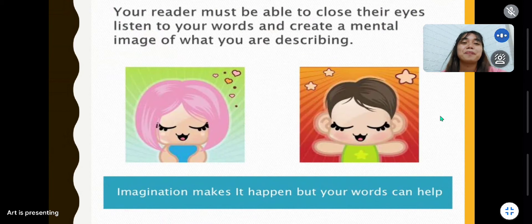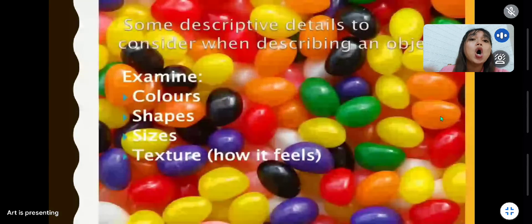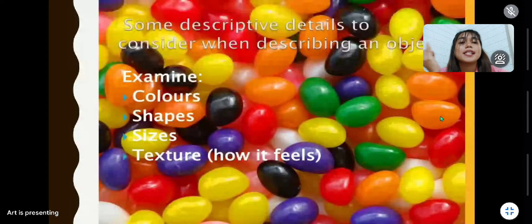Very good. So these are some descriptive details to consider when describing objects. You need to examine the colors, the shapes, the sizes, the texture of that object.